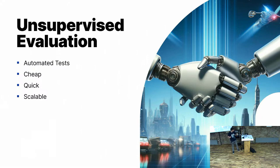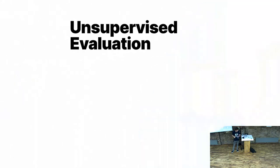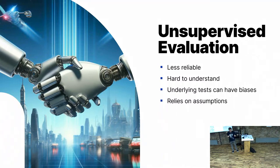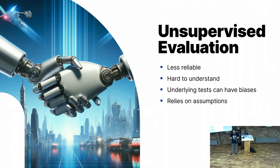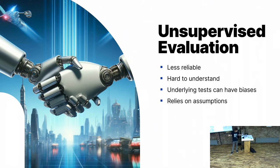We have unsupervised evaluation to solve these problems. It allows us to automate tests — it's cheap, quick, and scalable. However, it's far less reliable. It's hard to understand what the numbers actually mean. The underlying tests can also have biases; for example, one of these tests might perform differently in Dutch than in English. It also relies on certain assumptions — for example, what we assume about faithfulness and distance to sources. Does closeness to the source actually mean it's the right answer? If the sources say Paris is the capital of England, do we want to echo that, or do we want a better answer?